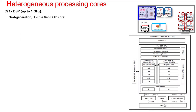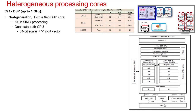The Jacinto 7 SoC features the C71X, which is the next generation of TI digital signal processors or DSP cores. The C71X DSP implements a 1 GHz dual data path CPU capable of both 64-bit scalar processing as well as 512-bit vector processing. This enables very flexible processing capability which yields 4 to 30 times the performance of the previous C66X generation of TI DSP, depending on the specific algorithms being executed.